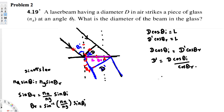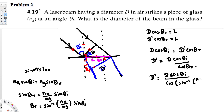Now we can replace theta_r with this value. So d' = d·cos(theta_i) / cos(arcsin((na/ng)·sin(theta_i))). We still don't have na explicitly provided, so we can simplify further by evaluating the cos of the arcsin expression.